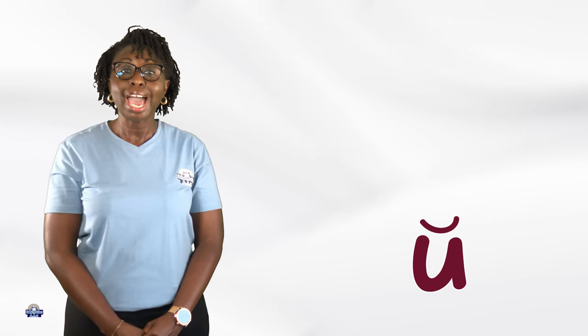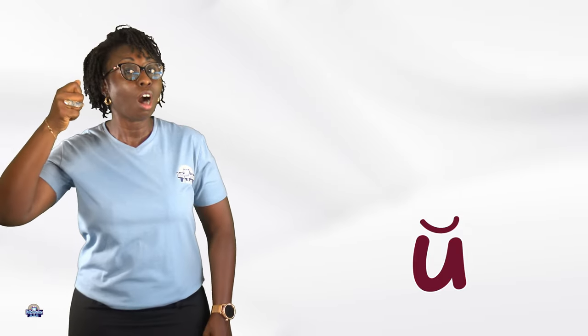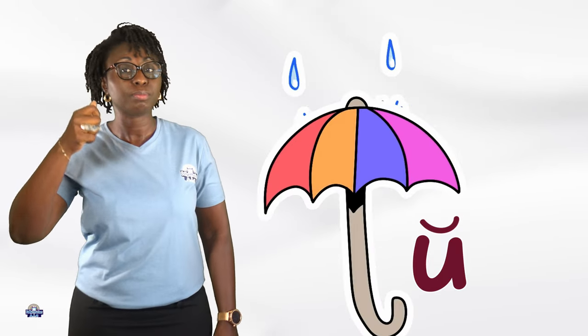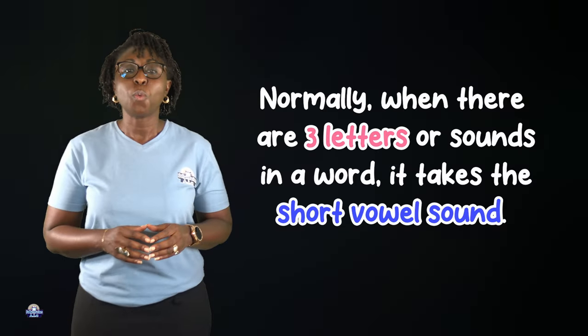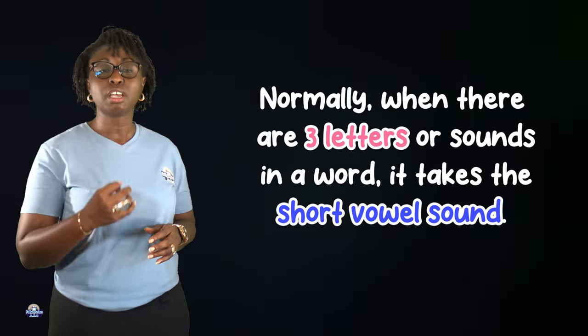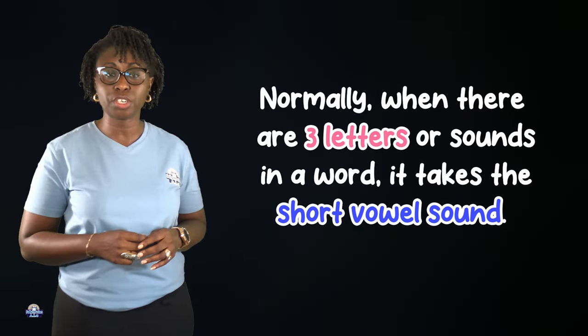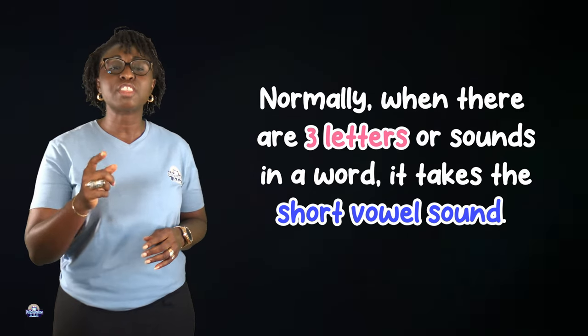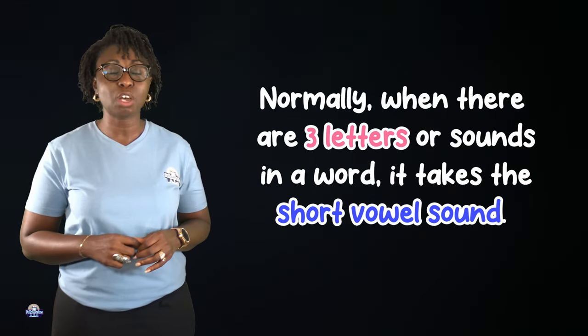U, as in U — Umbrella. Now, let us look at some words with the short vowels. Normally, when there are three letters or sounds in a word, it takes the short vowel sound.